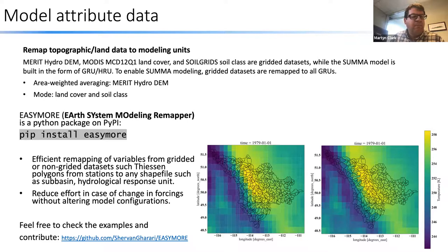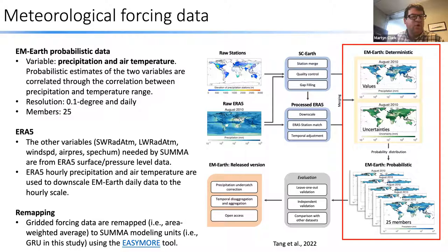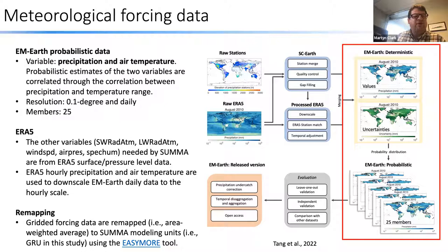The meteorological forcing data is Gochang's own EM Earth dataset — an ensemble of precipitation and temperature developed across the globe, recently published in the Bulletin of the American Meteorological Society. Gochang's science question is to understand how uncertainties in the meteorological forcing data propagate through to uncertainties in the hydrological model simulations. The main focus for the geospatial intelligence theme is the workflow elements — how they're being developed and how they're now applicable at the global scale.